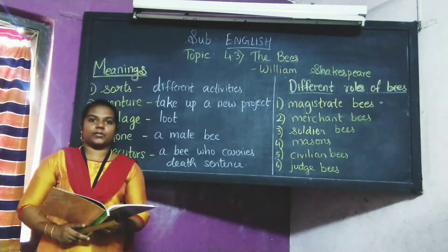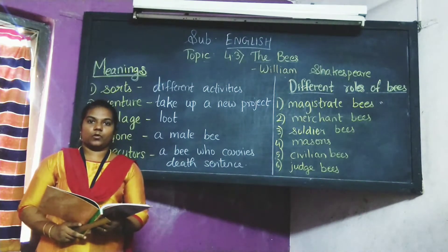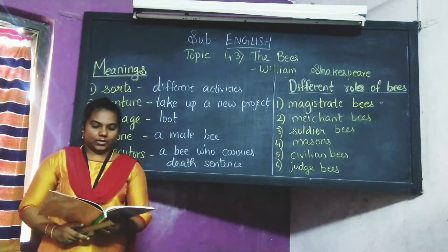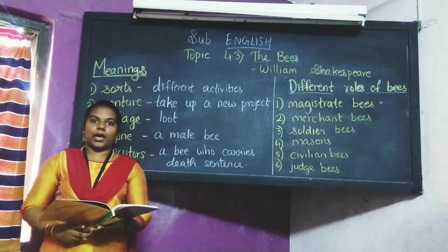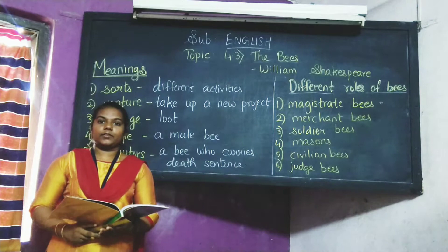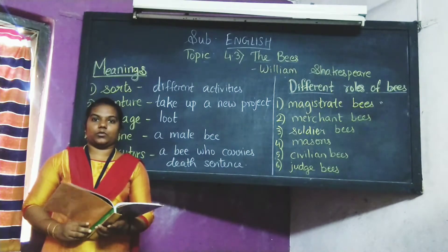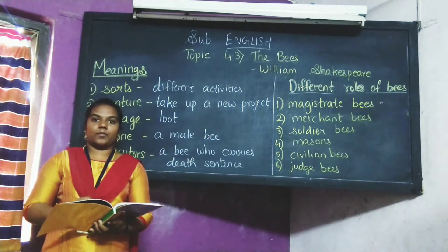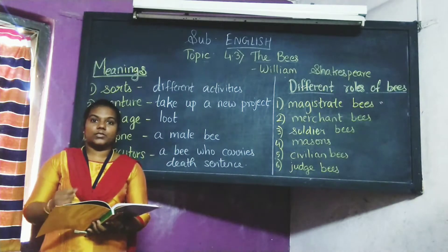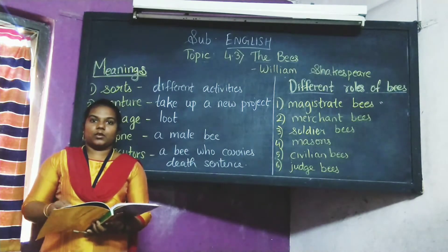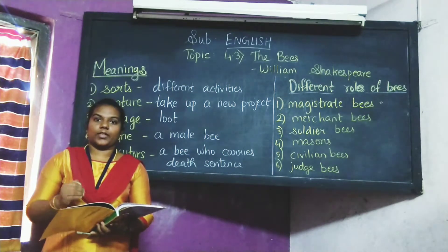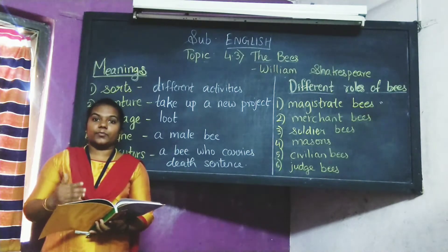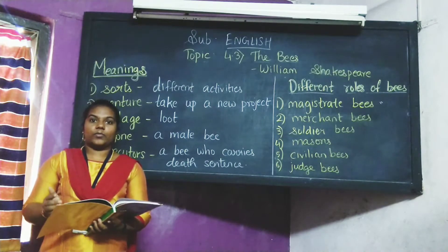There are magistrates who do the collective work at home — home meaning the beehive. They collect and organize the other bees to do the work properly. Then there are merchants. Merchants are the people who do trade — buying and selling. Here, the merchant bees go and collect nectar from the flowers, whether from flowers that are nearby or from flowers that are far off.